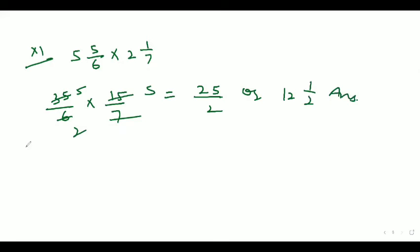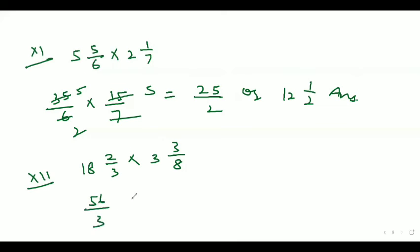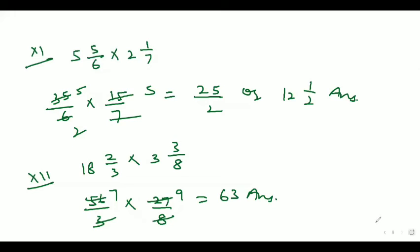Hope the eleventh part is clear. Now let's move to the twelfth part. The twelfth part is 18 whole 2/3 into 3 whole 3/8. So 18 whole 2/3 can be written as 56/3 and 3 whole 3/8 can be written as 27/8. After cancellation — 8 sevens are 56, 3 nines are 27 — the answer is 63.